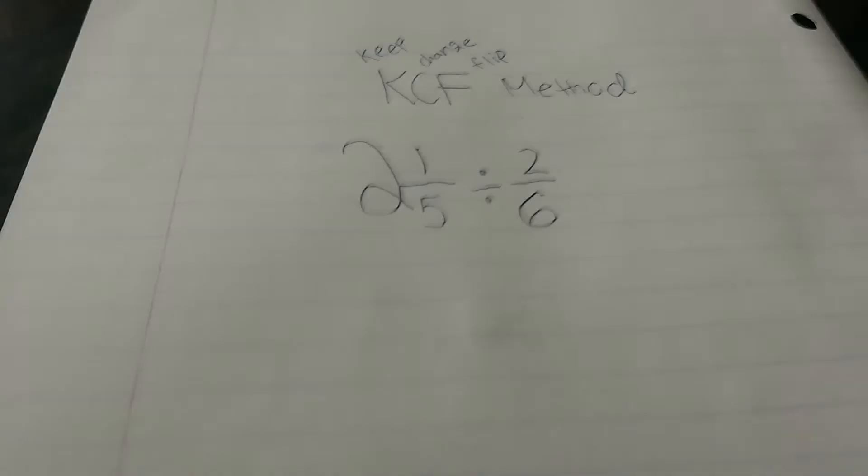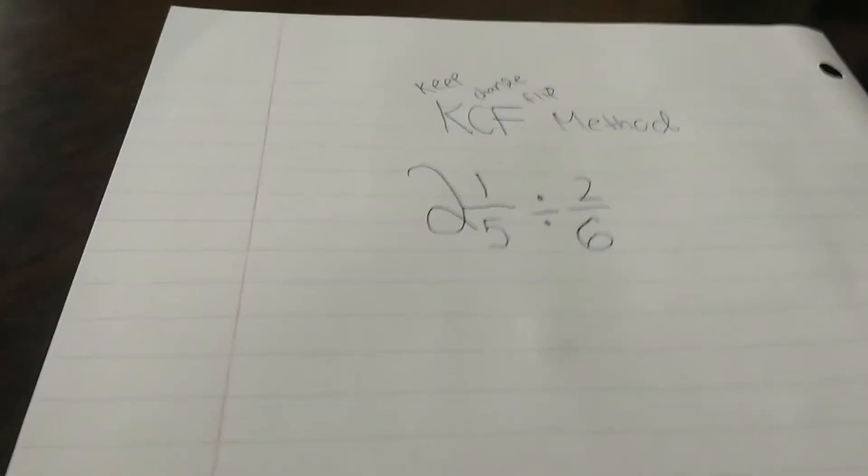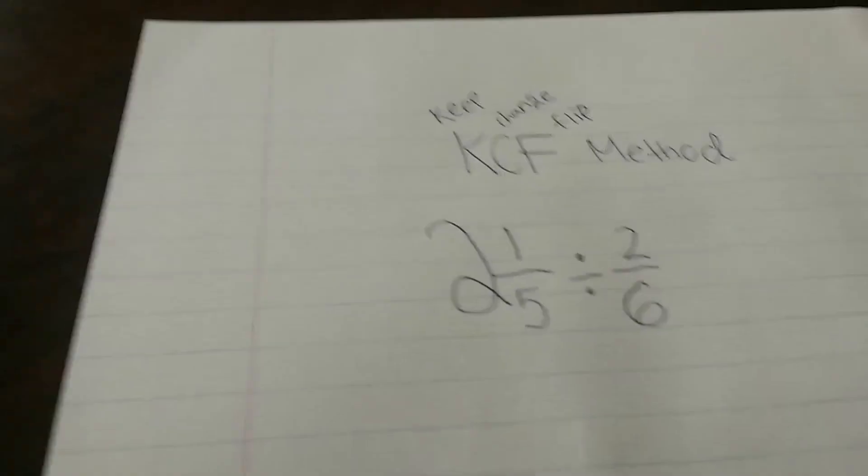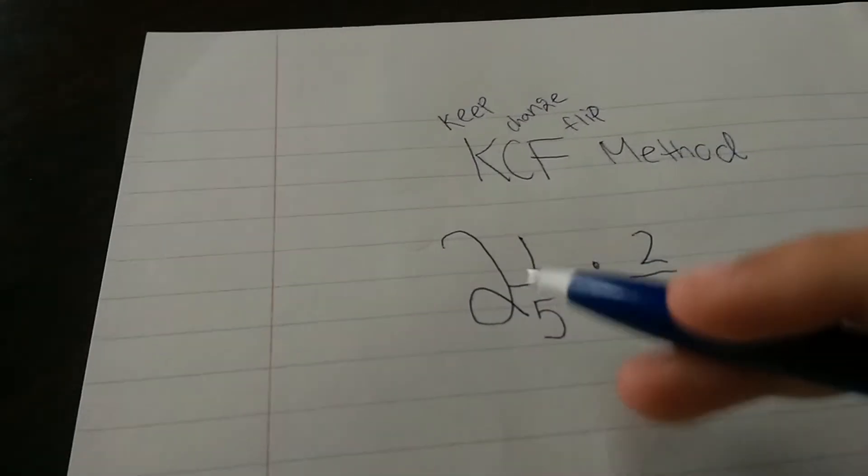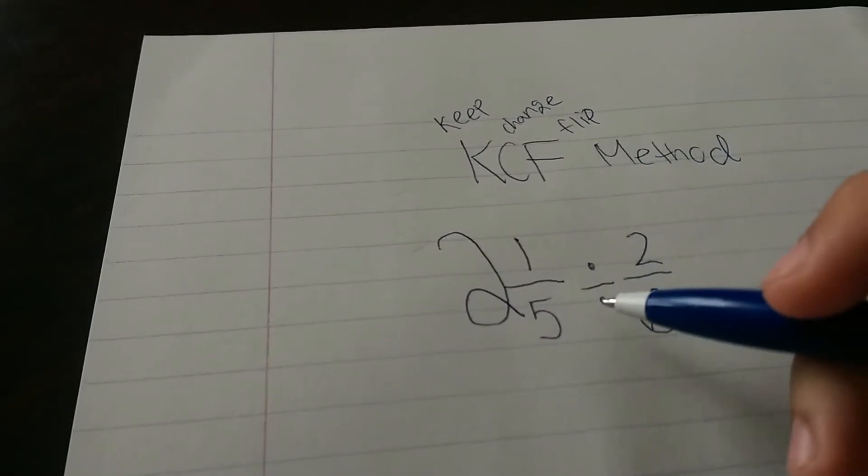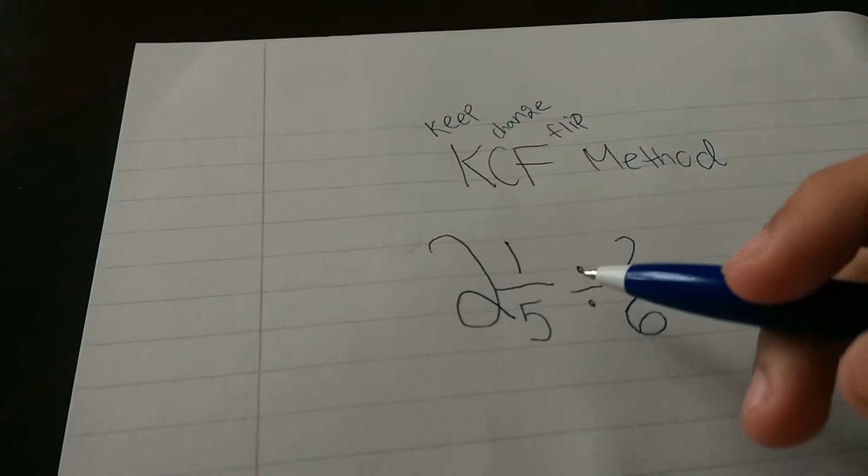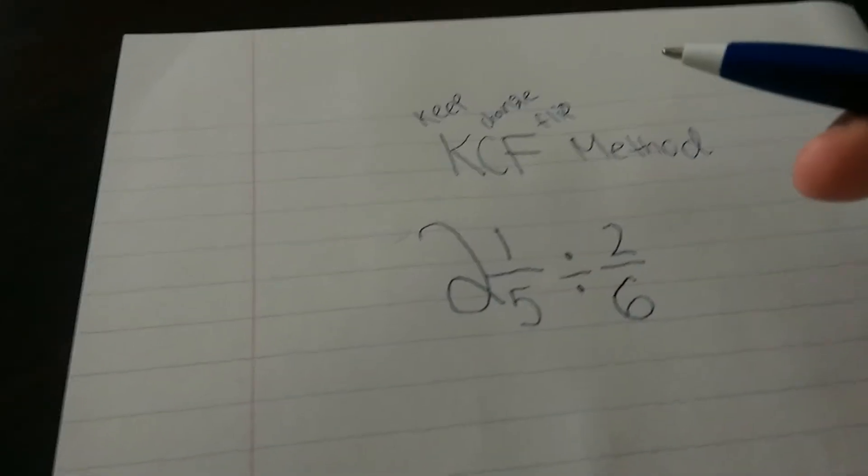What? Now, you may be confused right now, because I would be confused, I was there, what is that? And I'll show you. By the K, keep it, change it, and flip it method, what it means is, we keep the first number, we change the division sign to the opposite of it, which is multiplication sign,